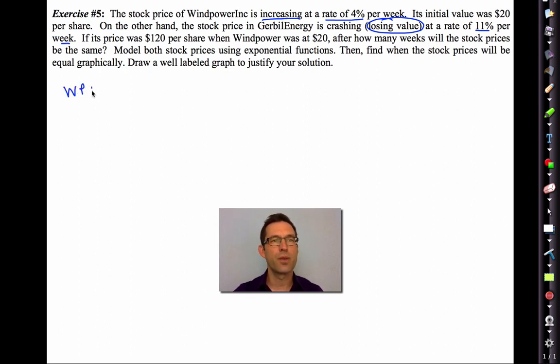All right, well, let's do Wind Power. Let's do Y equals. Well, what did we start off? We started off with 20. It's increasing at a rate of 4% per week. So here's an equation that models its value. On the other hand, Gerbil, well, that's decreasing. I mean, granted, it started off with $120, but it's decreasing at 11% per week. So there's its function. And what we want to do now, now that we've modeled them, is we'd like to create a graph that shows when these are equal. So let's bring out that TI-84 plus again.